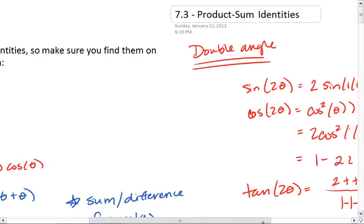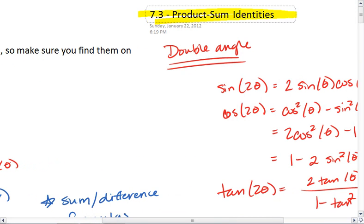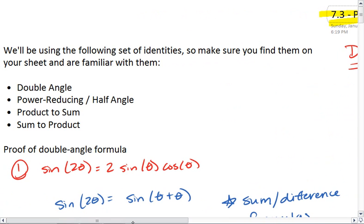These sets of videos are a continuation of 7.3, our product sum identities. In the first set, we covered double angle and power reducing. We're going to look a little bit more closely at half angle, and we're also going to look at product to sum and sum to product formulas.